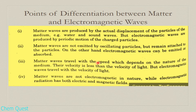Matter waves travel with a speed that depends on the nature of the medium, and their velocity is less than the velocity of light. Matter waves are not electromagnetic in nature, while electromagnetic radiations have both electric and magnetic fields associated with them.